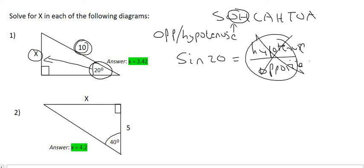The reason is that it says SOH CAH TOA, so it starts with the O. So instead, sin 20 is going to be the opposite over the hypotenuse. That's very important.